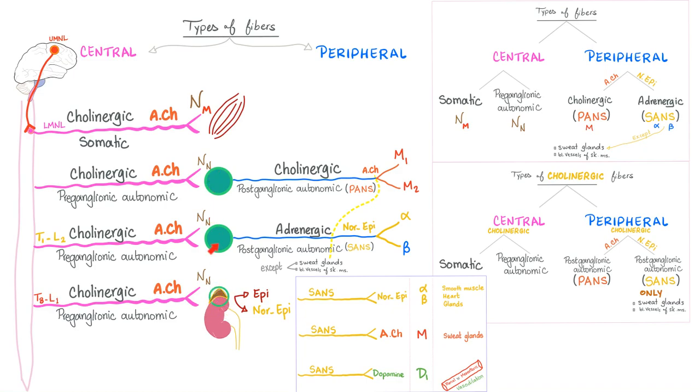Your adrenal medulla is a modified ganglion, so treat it as a ganglion. Preganglionic secretes acetylcholine always. There's no postganglionic here - it just releases epi and norepi into the blood.